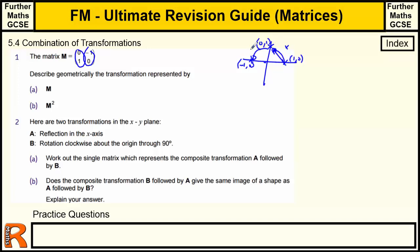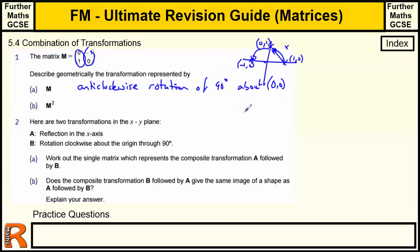Both points are rotating anti-clockwise, so this is an anti-clockwise rotation of 90 degrees about the origin (0,0). M squared would be doing this 90-degree anti-clockwise rotation twice, combining to give a 180-degree rotation about (0,0). We don't need to specify direction for 180 degrees, as it's the same in both directions.